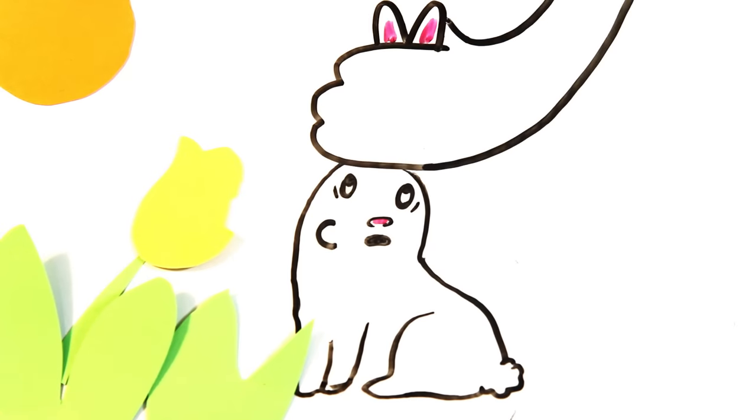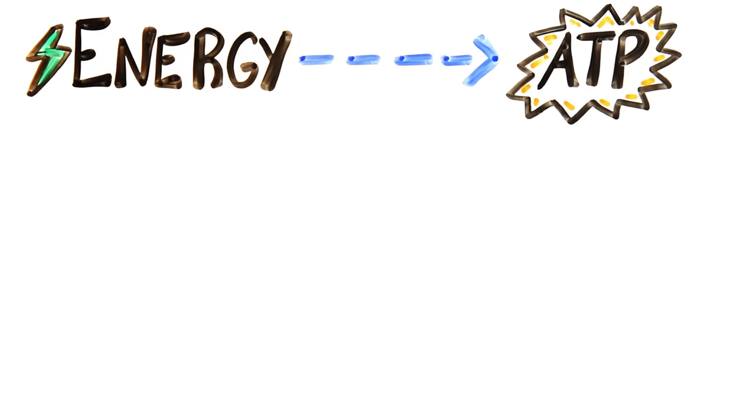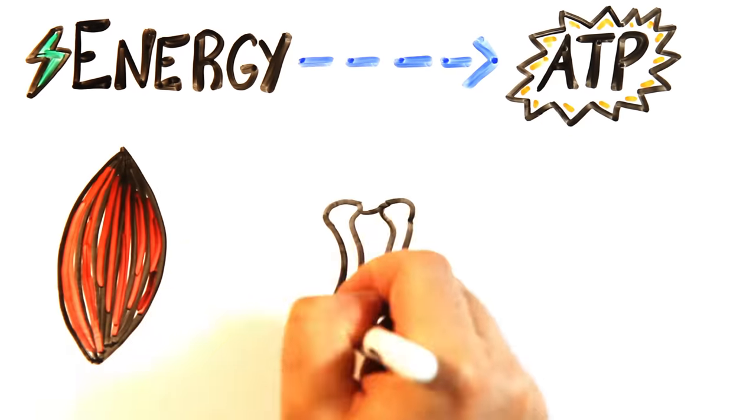We eat plants, or animals that have eaten plants, in order to gain that energy. Our bodies use that energy to power the process of a very special molecule called ATP, which powers every part of your life.